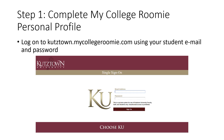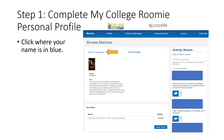The first step is to complete your MyCollegeRoomy profile. To start this process, log on to kutztown.mycollegeroomy.com using your student email and password. Once logged in, you will see your name in blue at the top of your screen. Click your name to get to your student profile.